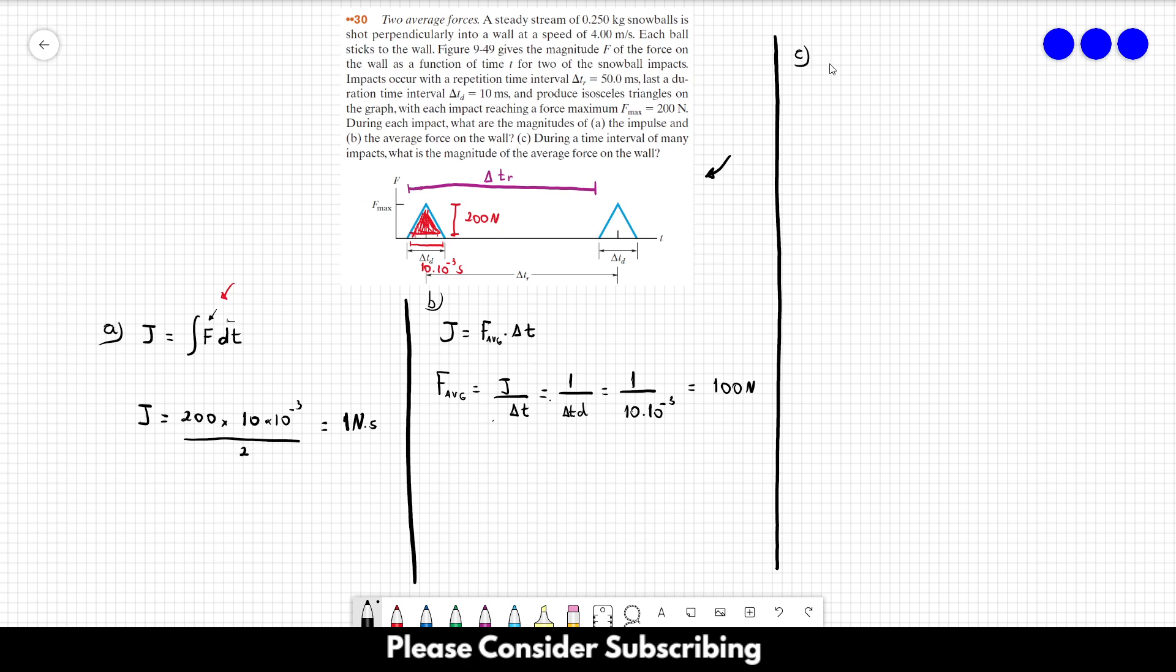So for letter C, the average force is equal to j over delta tr, which is equal to 1 over 50 times 10 to the minus 3, and this will give us 20 newtons. So that's the answer of letter C.